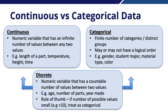We also have a third type called discrete data. Discrete data are numeric variables that have a countable number of values. Examples include age, the number of parts, or the year something was made. Even though they're numeric in nature, because we have a finite number of them, we'll often consider these to be categorical variables in machine learning, since they fall into a finite number of possible categories or groups.